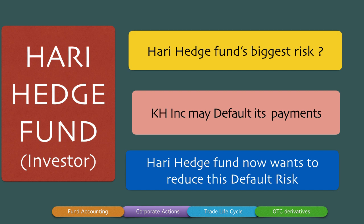Hari Hedge Fund therefore wants to reduce this default risk, which is an uncertainty as of now. Either Hari Hedge Fund can completely exit the bond position — find another buyer for the bonds — in which case it will take a significant loss if the event of default occurs. But the default event hasn't occurred yet, so Hari Hedge Fund wants to stay invested in the bonds and take a protection against default risk. This is a very important aspect of the mentality of a fixed income investor: if they knew for sure the borrower is going to default, they wouldn't invest in the first place. But they take risks by investing in less than top-notch investments because they get better coupons and earnings, which boosts the fund's performance.